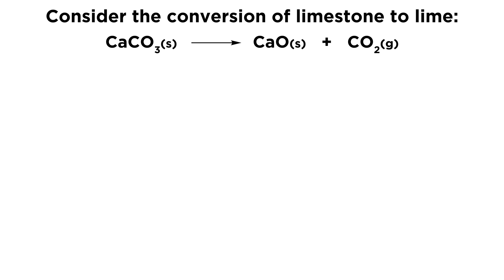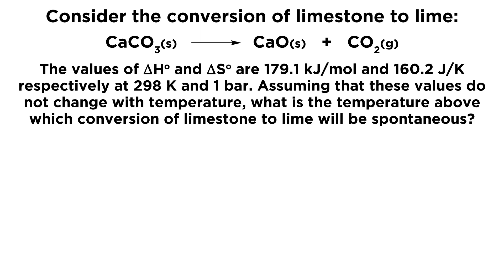Consider the conversion of limestone to lime. We have calcium carbonate, CaCO3, yielding calcium oxide, CaO, and CO2 gas. The values of delta H and delta S are 179.1 kilojoules per mole and 160.2 joules per kelvin, respectively, at 298 K and 1 bar. Assuming that these values do not change with temperature, what is the temperature above which conversion of limestone to lime will be spontaneous?